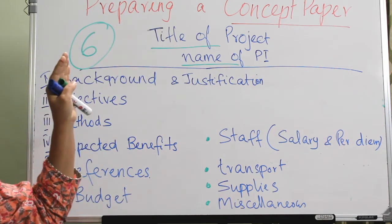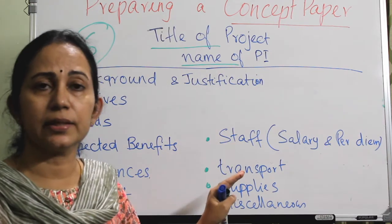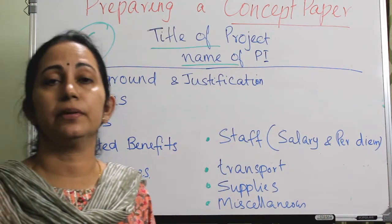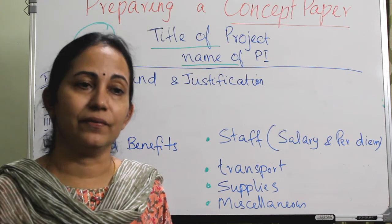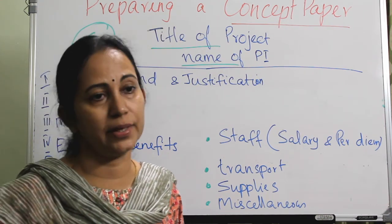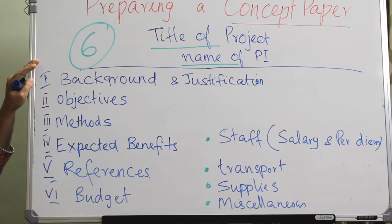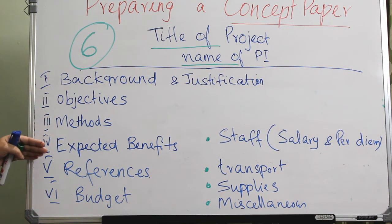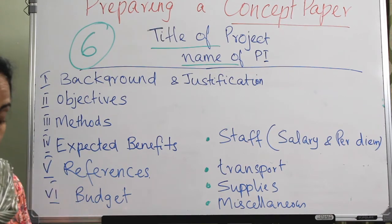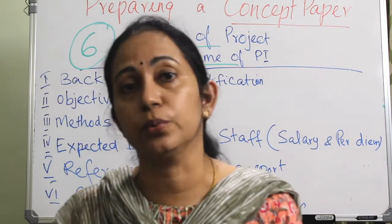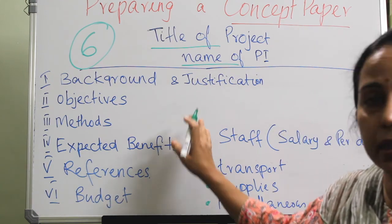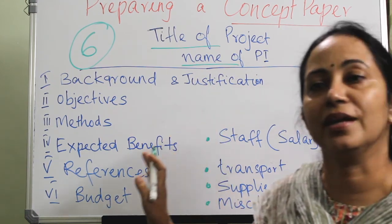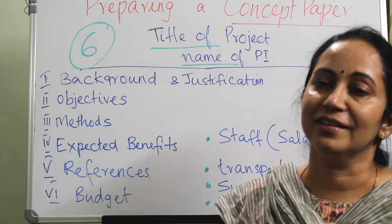Think about this concept paper and try to write one for a proposed project and submit it to a good research funding agency. Remember, these are the six steps for writing a concept paper: background and justification, objectives, methods, expected benefits, references, and budget. You can stick to this format unless the funding agency provides a particular format of their own. This is the correct format for writing a concept paper. If you have any doubts, just ask in the comment box.